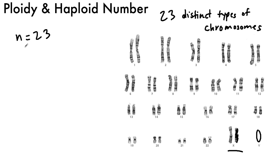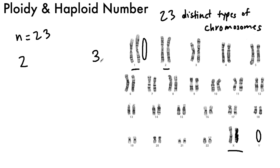Now let's try to figure out what the ploidy is. We have two chromosomes for every single set — two here, two here, two here, two here, even two here for the sex chromosomes. So our ploidy would be two. Two chromosomes for each set. If we had an extra chromosome here for every single one of these sets, we would have three, so our ploidy would be three. But since we only have two, our ploidy is only two.